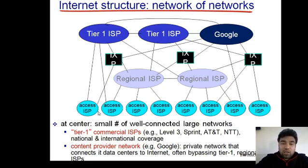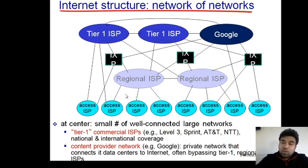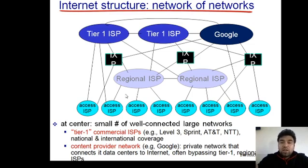By using local IXPs, you save the bandwidth of tier 1 service providers and also improve latency, because you don't have to cross those ISPs to transfer data within your country. If you use local ISPs, your number of hops is reduced and end-to-end delay is reduced. NIXI reduces traffic at tier 1 international ISPs. This is how the internet infrastructure is laid down — a hierarchy of tier 3, tier 2, and tier 1 ISPs — and that is how the internet is designed.